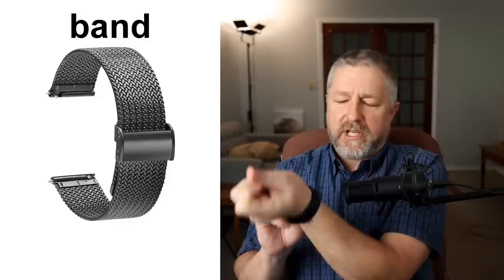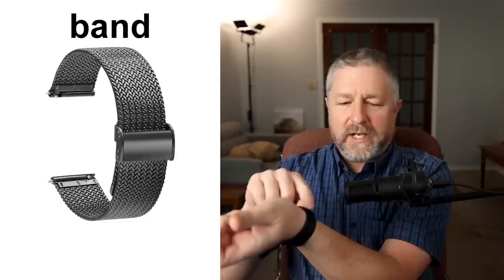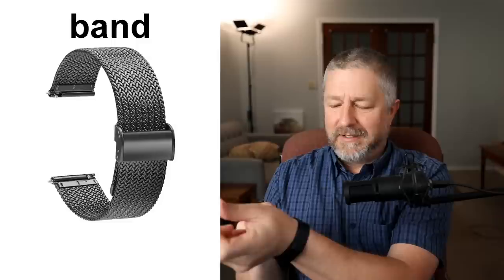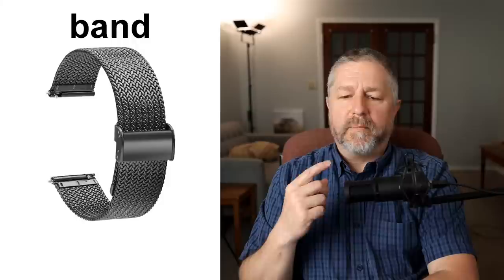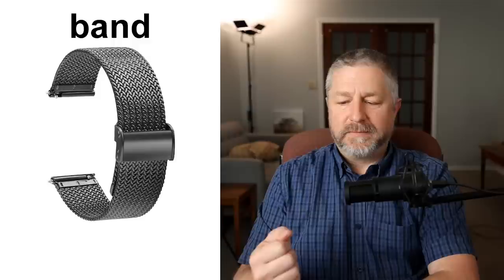My watch has a band — this is a watch band. Jen and I talked about what the part is called when you put the watch together: we weren't sure if it was a clasp, a latch, or a fastener. But this is definitely my watch band — and actually it's a Fitbit. We would probably call it a watch band if specifically talking about a watch.